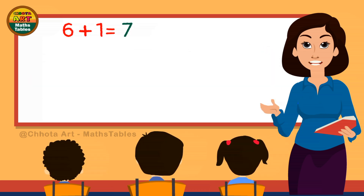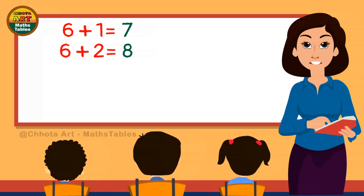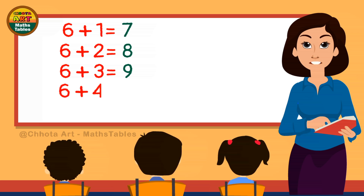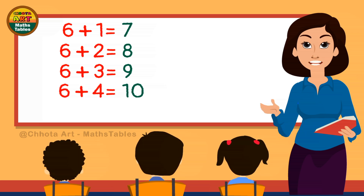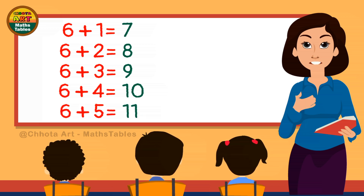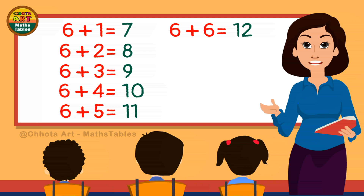6 plus 1 is 7. 6 plus 1 is 7. 6 plus 2 is 8. 6 plus 2 is 8. 6 plus 3 is 9. 6 plus 3 is 9. 6 plus 4 is 10. 6 plus 5 is 11. 6 plus 5 is 11. 6 plus 6 is 12. 6 plus 6 is 12.